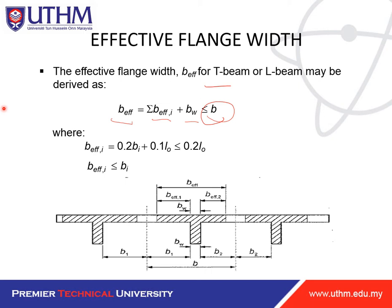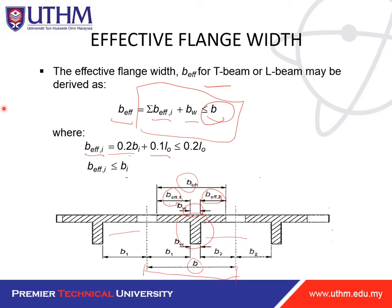For a T-beam, you have slab one and slab two with the beam in the middle. The original b spans the full width, so b_eff must be less than total b. For a T-beam, b_eff equals b_eff1 plus b_eff2 plus b_w. The formula for b_eff_i is 0.2·b_i + 0.1·L0, which must be less than or equal to 0.2·L0, and also less than or equal to b_i.